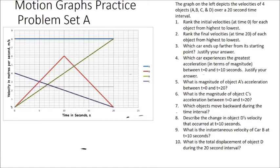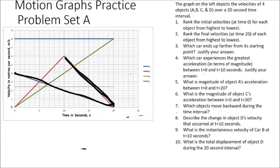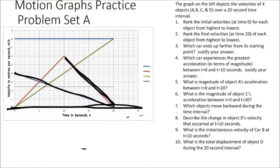The next question asks which objects move backward during the time interval. The answer is that none of them move backward — they all have a positive or zero velocity for the entire time interval. Object C and object D have negative accelerations during parts of the graph, but their velocities never go below zero. So they're always moving in the positive direction. No objects move backward.